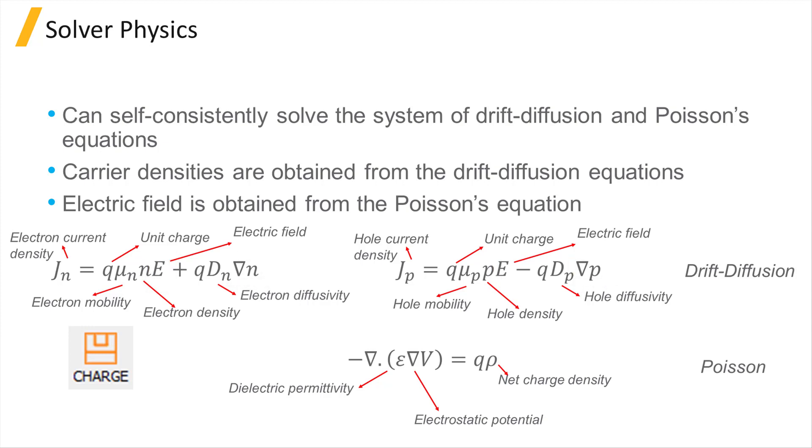These processes are represented in the drift-diffusion equations as the sum of two terms. To solve the drift-diffusion equations, the electric field must be known. This can be determined by solving Poisson's equation for the same device.